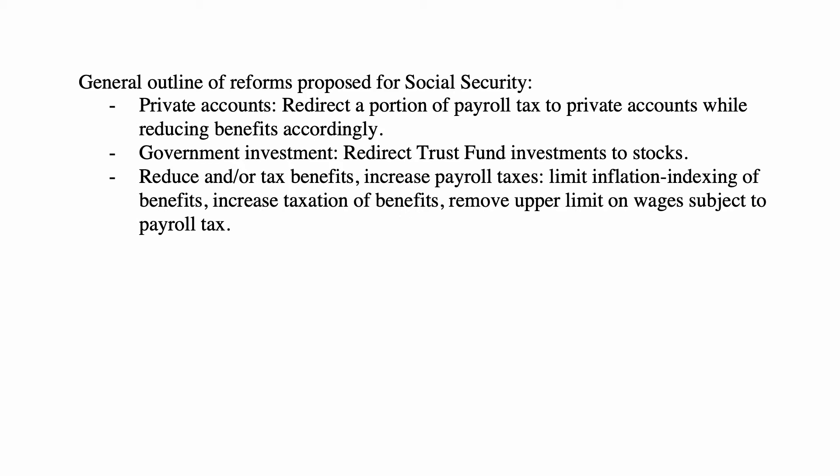Proposals included removing the upper limit on wages subject to Social Security tax — currently around $120,000 per year — which raises the question of whether the upper limit on benefits would also be removed. None of these reforms were really put in place. There was a short period under the Obama administration when the payroll tax was reduced to stimulate the economy, and President Trump also suggested a similar reduction during the 2020 crisis.